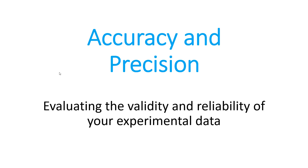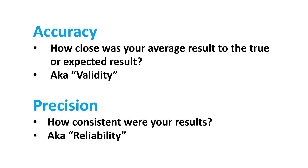Here are some definitions. Accuracy means how close your average result was to the true or expected result, and accuracy is sometimes called validity. Precision is how consistent your results were, and when you hear about precision, think about reliability. So precision and reliability go together, and accuracy and validity go together.